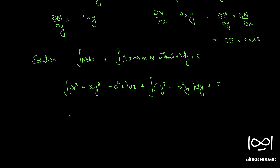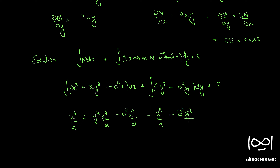So we have x⁴/4 + y²·x²/2 − a²·x²/2 − y⁴/4 − b²y²/2 = c.